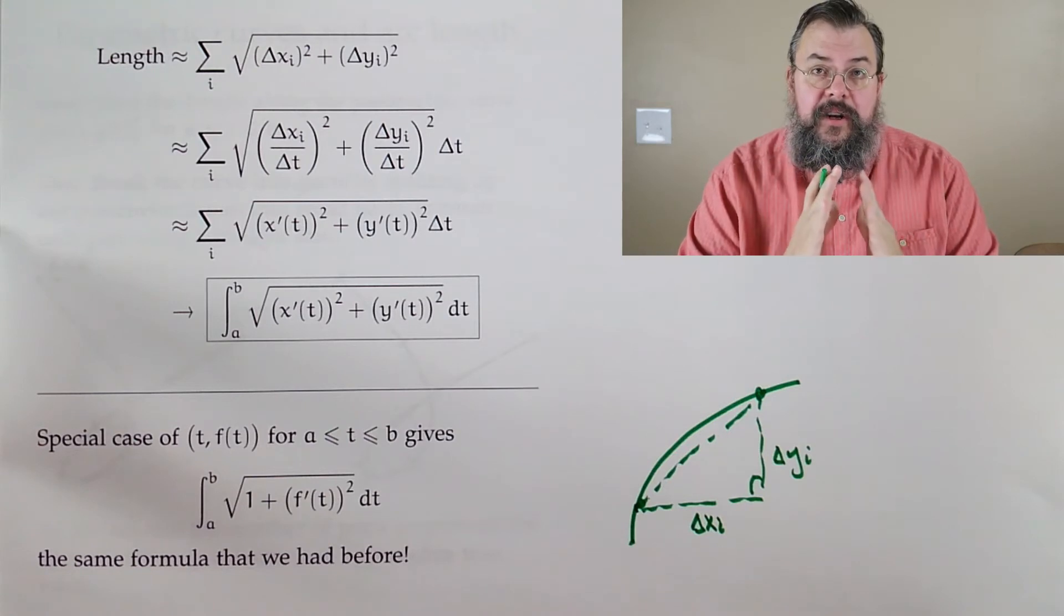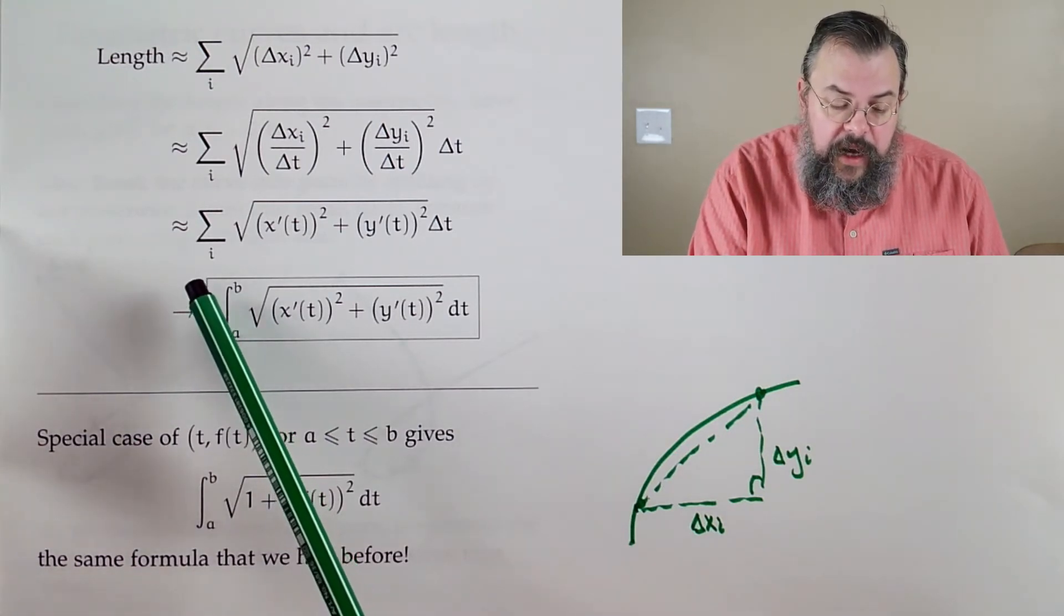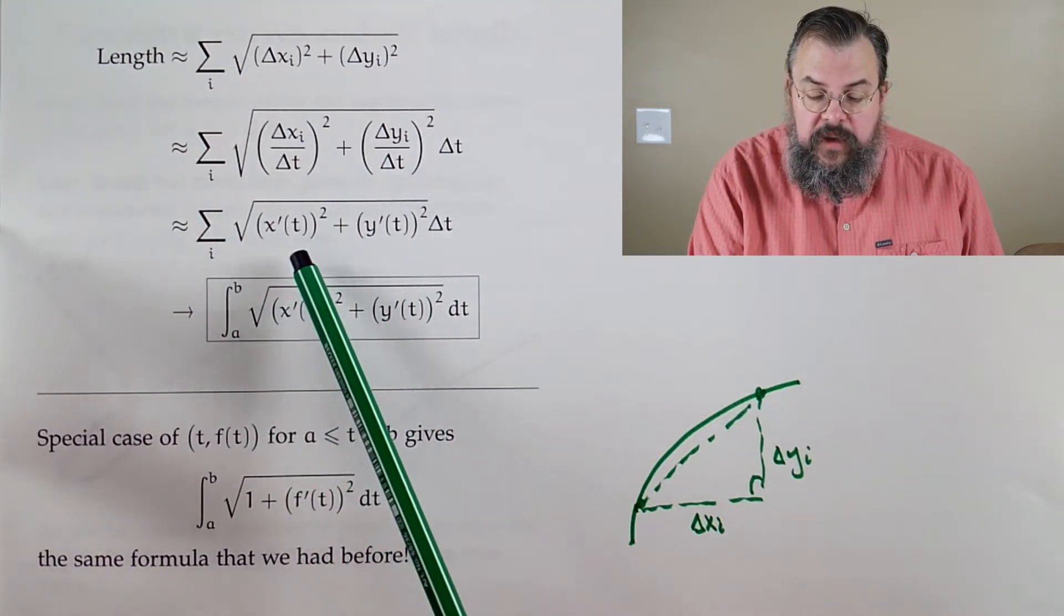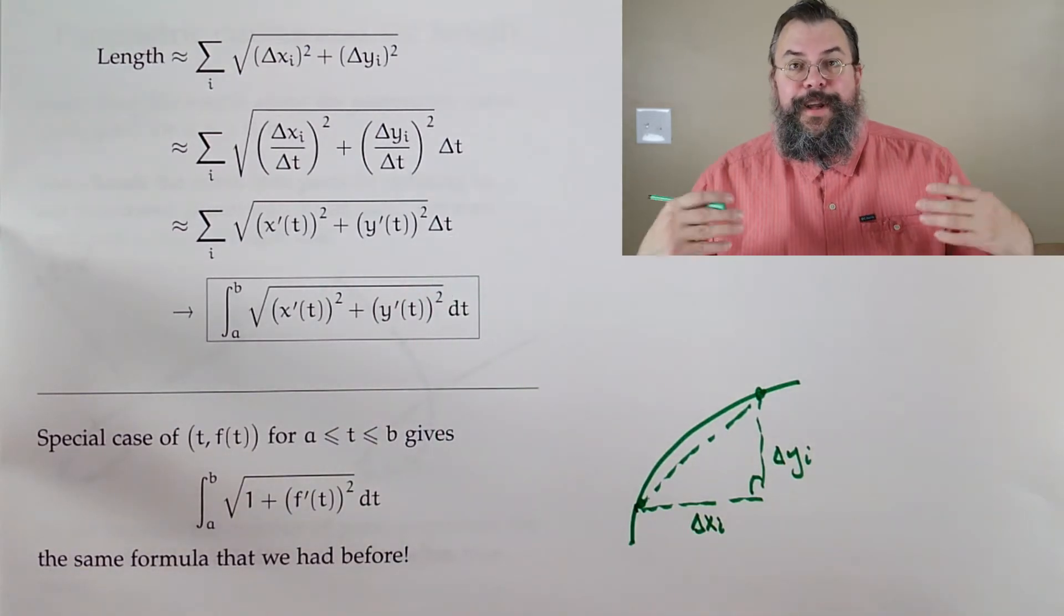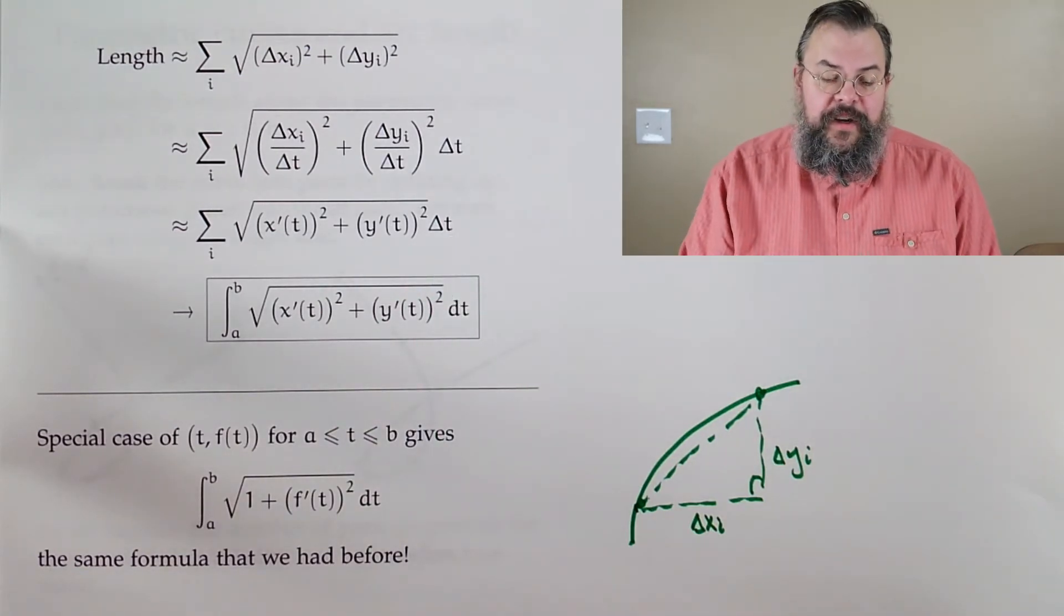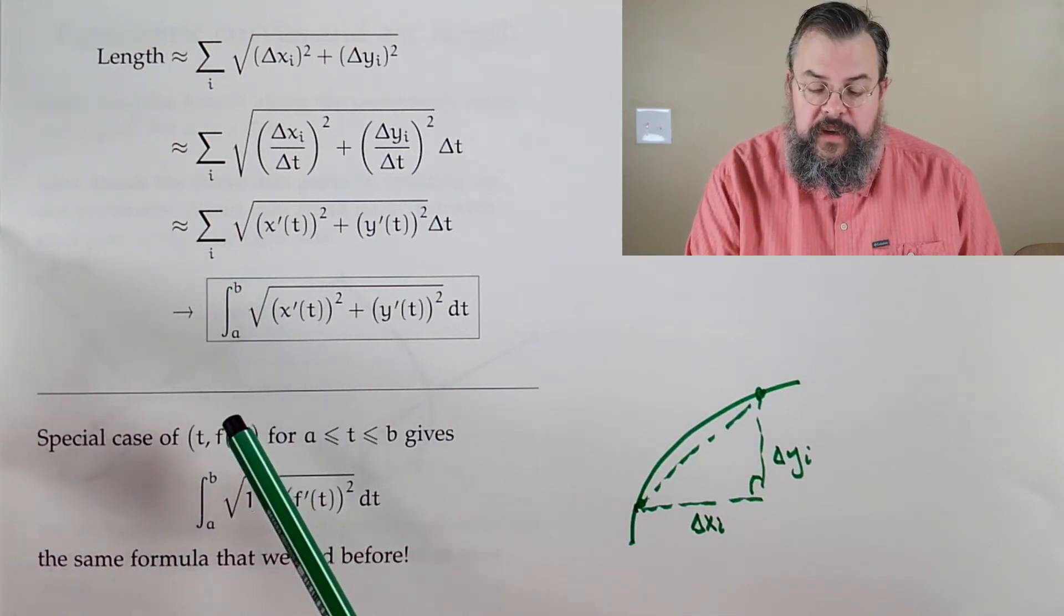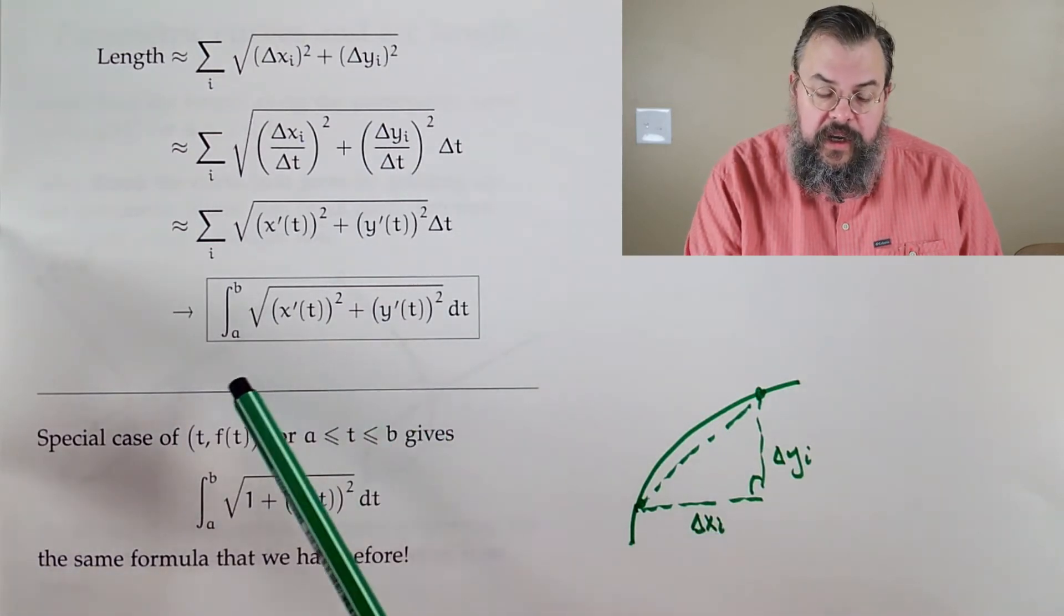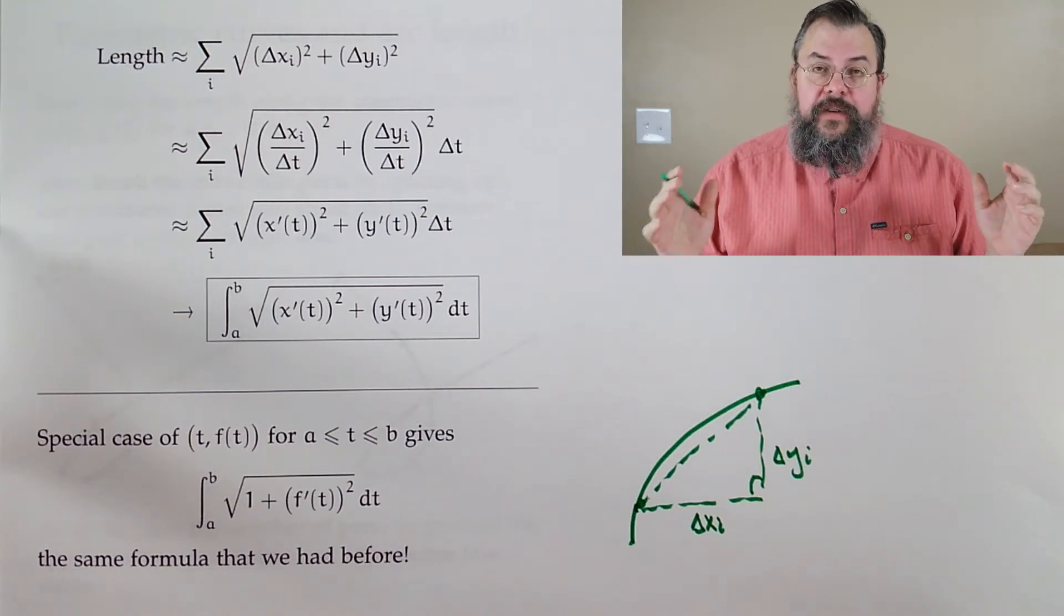So finally we say, I just have to add up my pieces here, the square root X prime T squared plus Y prime T squared, change in T, Delta T. As we let our pieces get smaller and smaller and smaller, our sum becomes an integral, because integrals are all about adding up. And our Delta T becomes our DT, and there we go. Beautiful! Nice formula!